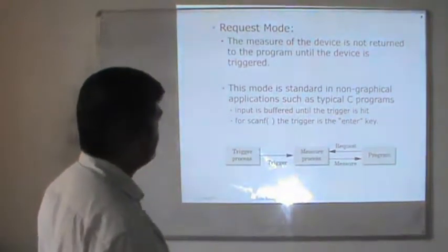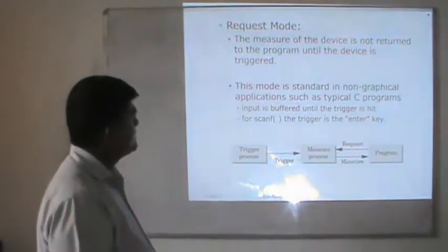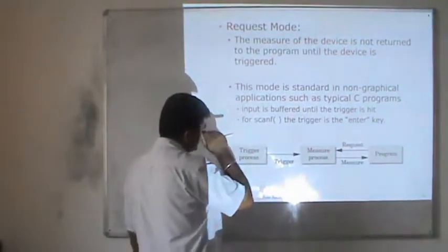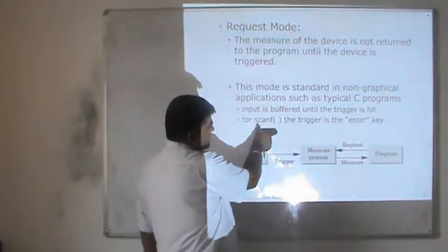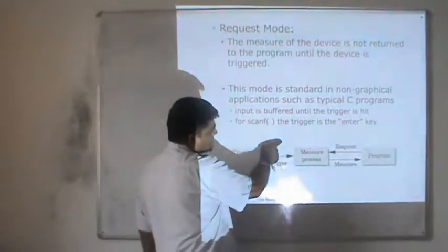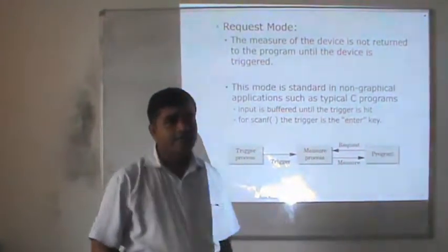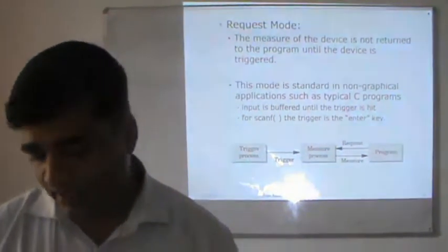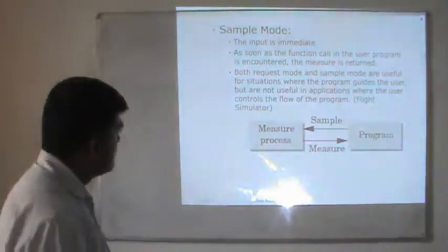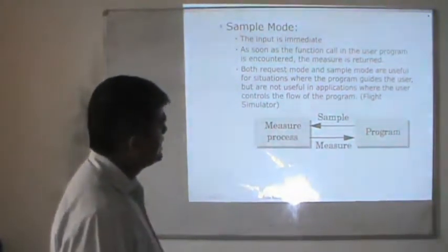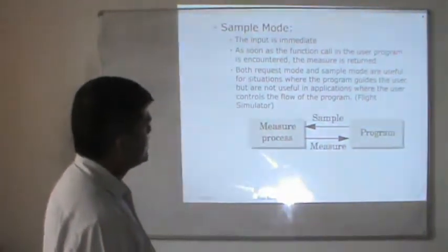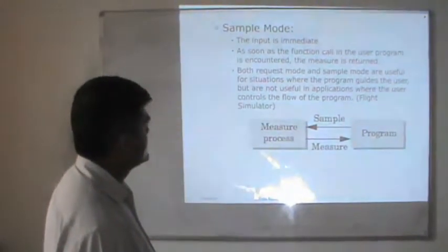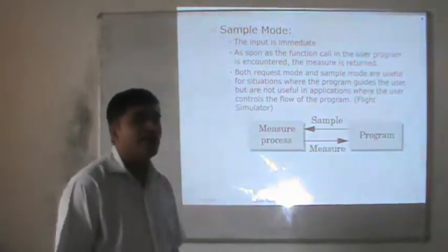In request mode, the measure of the device is not returned to the program until the device is triggered. This mode is common in non-graphical applications such as typical C programs — input is buffered until the trigger is hit. For example, in C we have scanf; the trigger is the Enter key. After pressing Enter, the input is taken up and further processing decreases. In sample mode, the input is immediate — as soon as the function call is encountered, the measure is returned. Both request mode and sample mode are useful where the program guides the user, but are not useful in applications where the user controls the flow, like flight simulators.